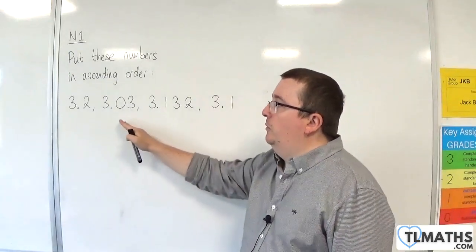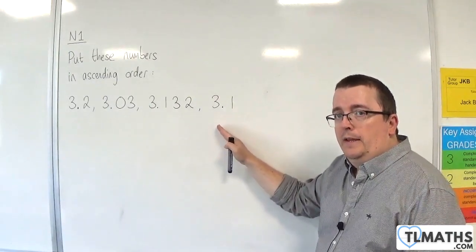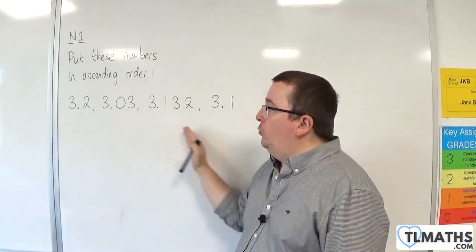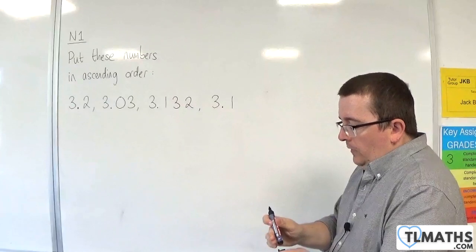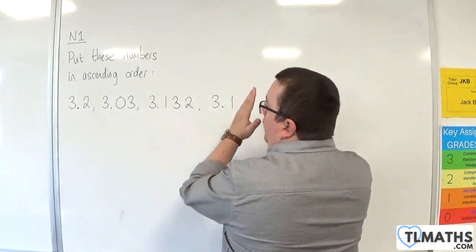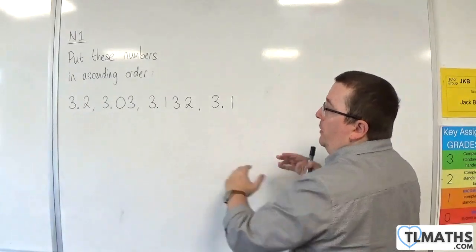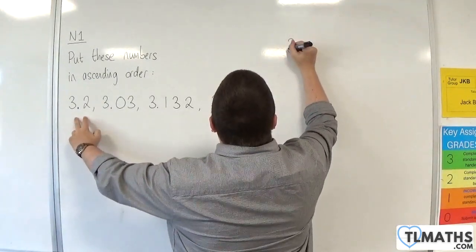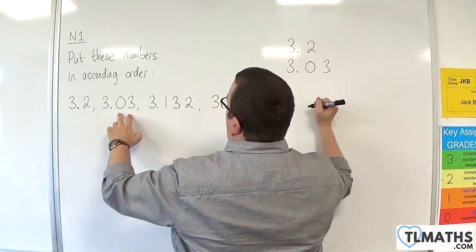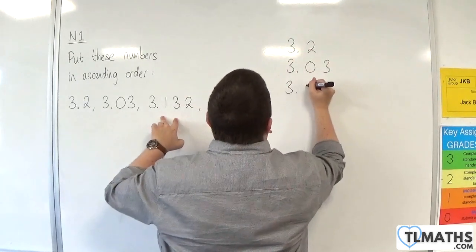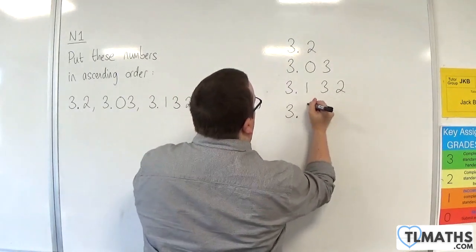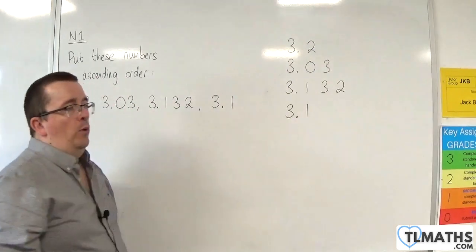Putting decimals into order is a little bit more tricky. The best way to do it is to write each one underneath the other, lining up the decimal points. So: 3.2, 3.03, 3.132, and 3.1. Make sure your decimal points line up.